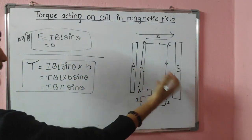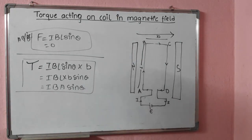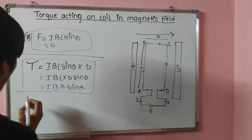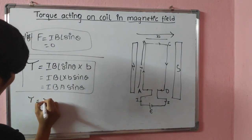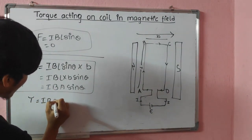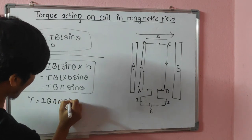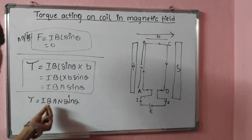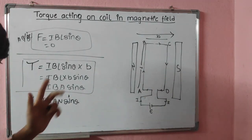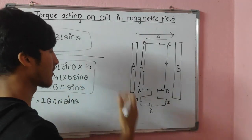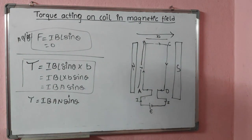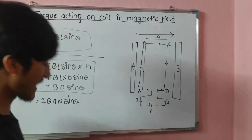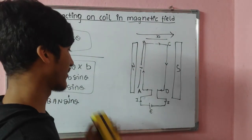This is the general expression for the torque experienced by a coil in a magnetic field. If the coil has N number of turns, then we can write τ = NIBA sinθ, where I is the current, B is the magnetic field, A is the area of the coil, and N is the number of turns. This is the complete expression for the torque experienced by any coil placed inside a magnetic field.